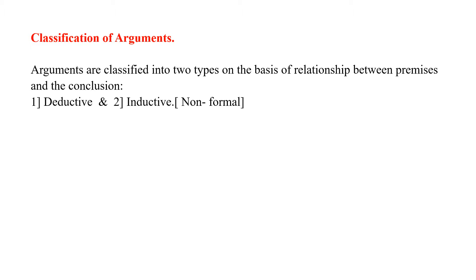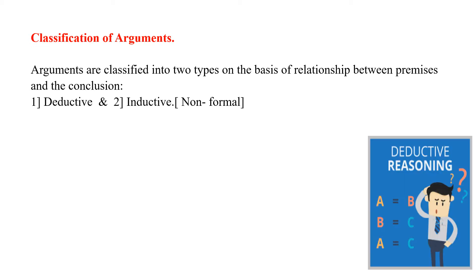Arguments are classified into two types on the basis of the relationship between the premises and the conclusion. The first is deductive argument and the second is inductive or non-formal argument. As you can see in this picture, in deductive reasoning: if A is equal to B and B is equal to C, then A will be equal to C. This is a deductive argument.